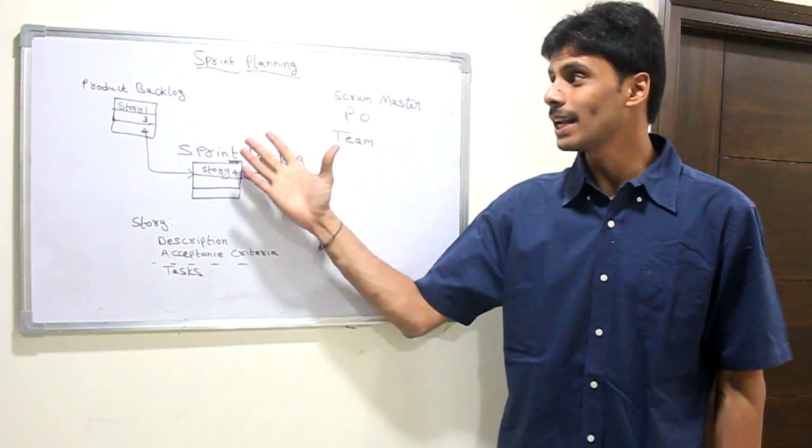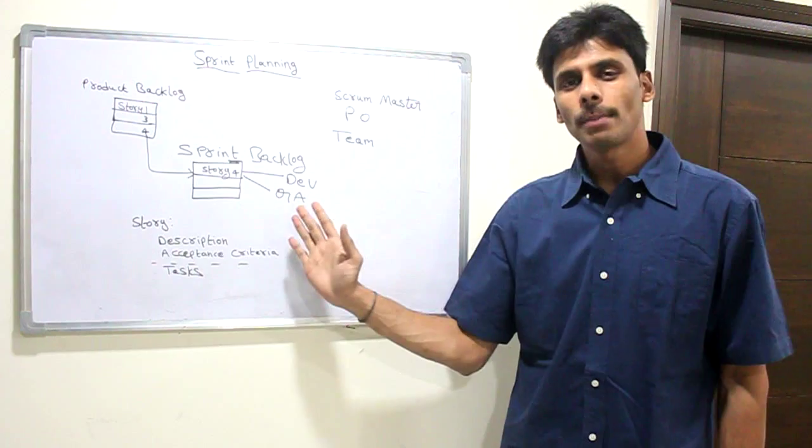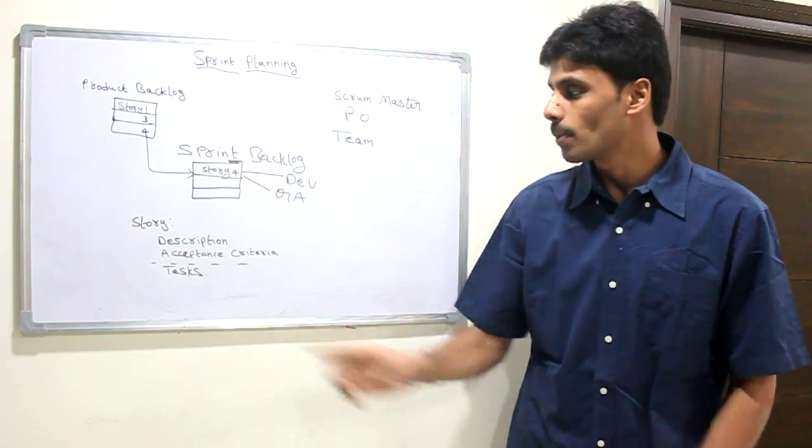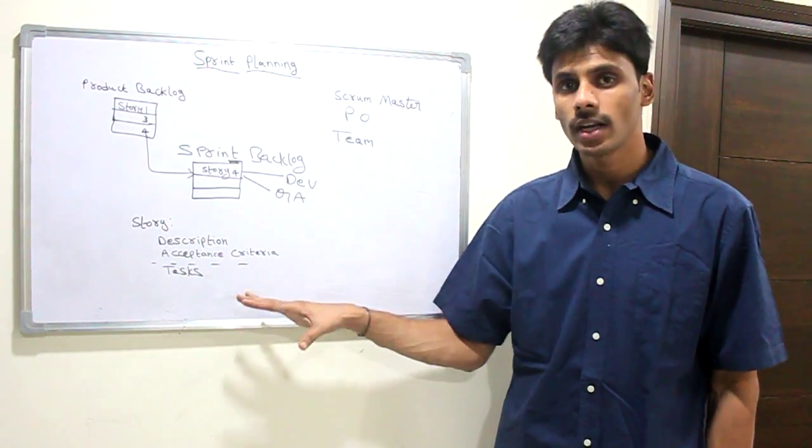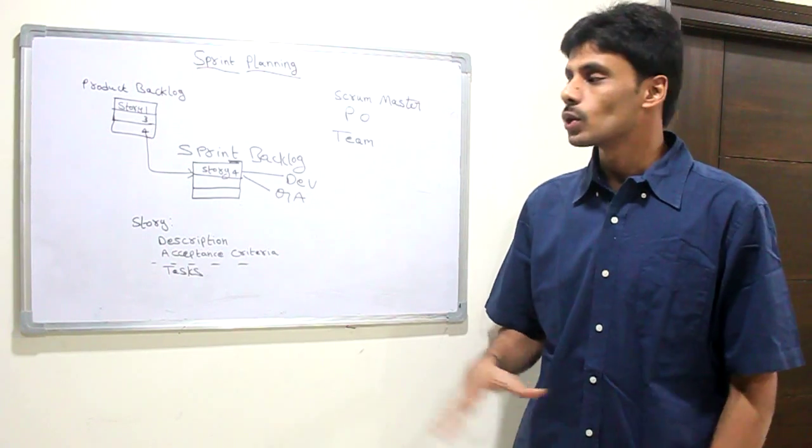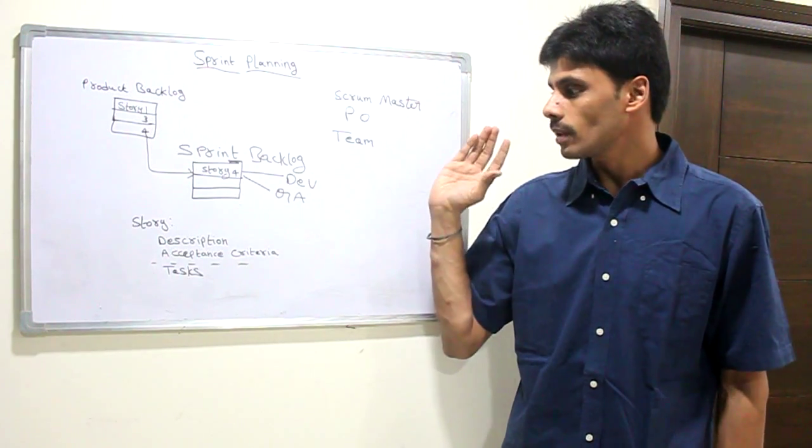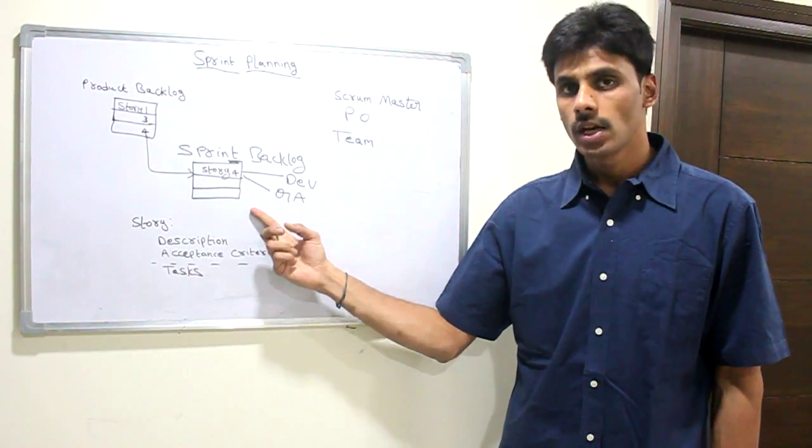We maintain stories or requirements using tools like Jira. Each of these stories have a description. In this planning meeting, we make sure we understand the requirements. Even before we come to planning, we usually do this in grooming to make sure that the requirement is clear, the acceptance criteria is clear, and it has the tasks on it.